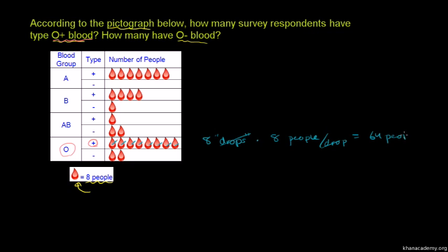So there are 64 people. So the number is 64. So there are people with O positive blood.